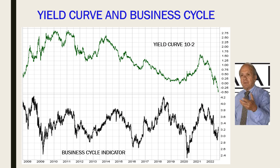This chart shows two graphs. The yield curve is computed by subtracting the two-year bond yields from the 10-year bond yields. As you can see, the difference between the two has been going down quite sharply and in fact is now negative, which means that the yield curve is inverted.